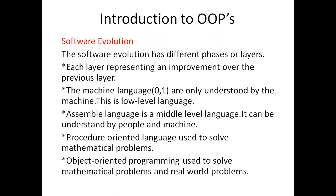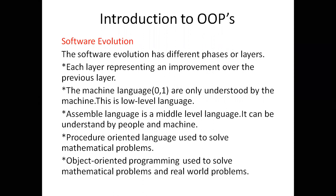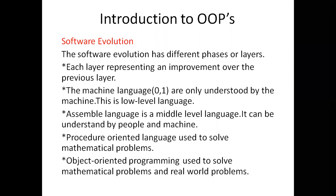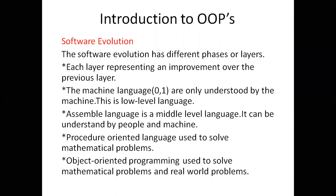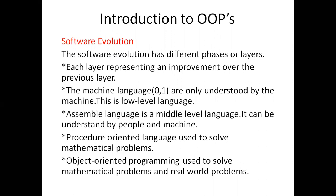This is the software evolution — in this way, software upgraded over time. Every layer has some extra benefits, some improvement over the previous layer. First we have machine language that works on binary numbers, either 0 or 1. Later, assembly language came — a middle-level language understood by people as well as machines. Third came procedure-oriented programming, like C language. It had some drawbacks, which is why object-oriented programming came into the market.